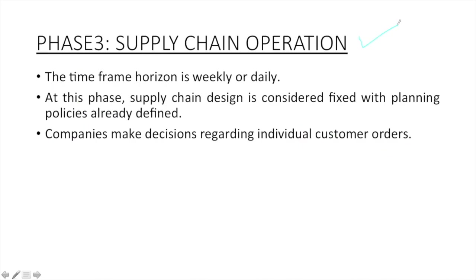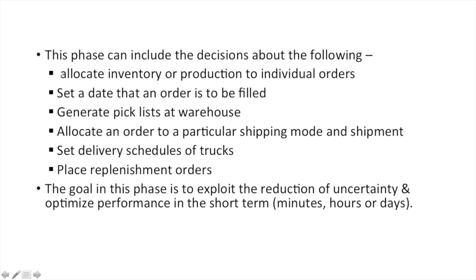The next stage is supply chain operations. The company has decided its supply chain configuration and planned for a particular season; now it will execute what it has planned. In this phase, as a supply chain manager, you will be making decisions on a daily basis or maximum on a weekly basis. You will focus on individual customer orders — allocating inventory and production to that order, deciding the delivery date, and deciding the picklist in the warehouse. For example, when Flipkart gets an order from one customer, all the flows involved in fulfilling that order fall under this phase. The goal of this phase is to optimize overall performance because there is no uncertainty involved.